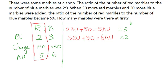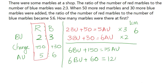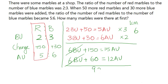Multiplying the first equation by 3: 3 times 2 gives 6 before units, plus 3 times 50 gives 150, equals 3 times 5 which is 15 after units. Multiplying the second equation by 2: 2 times 3 gives 6 before units, plus 2 times 30 gives 60, equals 2 times 6 which is 12 after units. Now subtract the two equations: 6 before units minus 6 before units cancels out, and 150 minus 60 gives 90, equal to 15 minus 12 which is 3 after units.